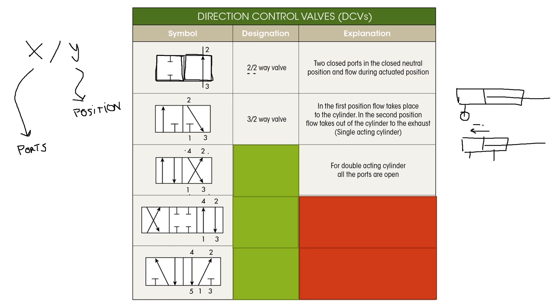So we know that we have four ports and two positions, two squares. So it's going to be a 4/2 way valve. Four ports, two positions.